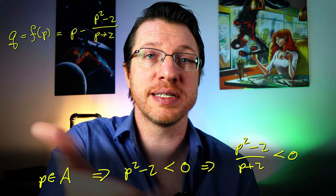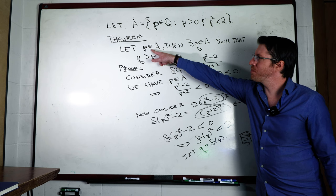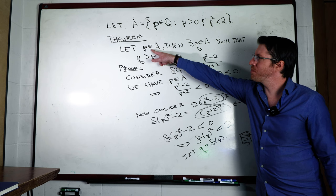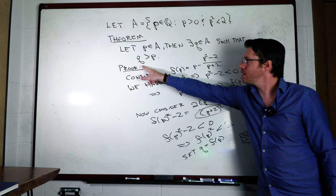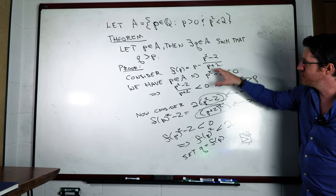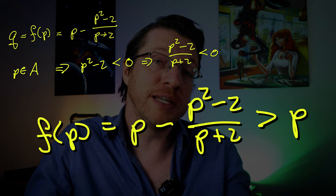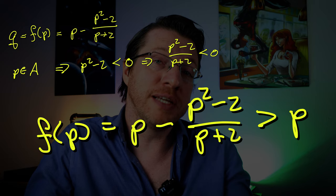p squared minus 2 is negative, and since p is positive, so is p plus 2. We start out with a member of A, which we called p, and then we looked for a q such that q is going to be bigger than p, and we showed that because this term ends up being negative, and so we're subtracting a negative term from p, and so that means that it is getting larger, hence f of p is bigger. Now, the bit that takes some more work is showing that the square is smaller than 2.